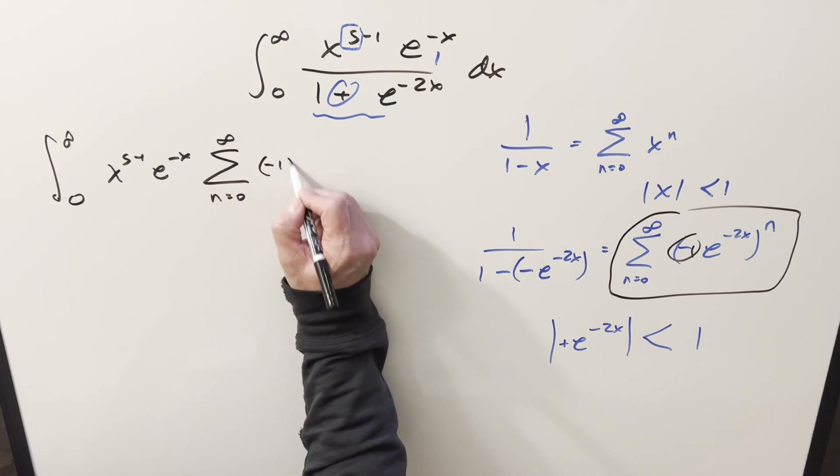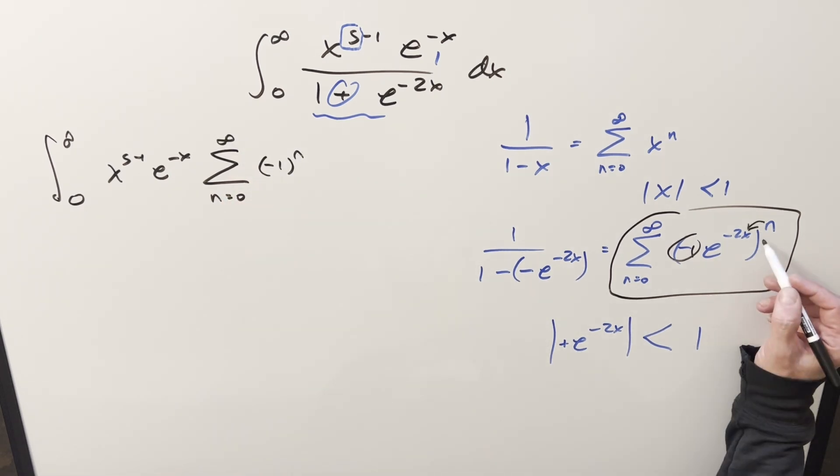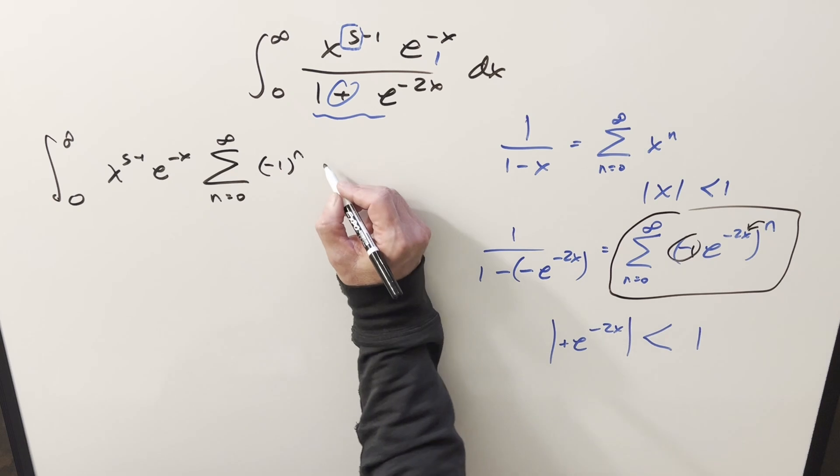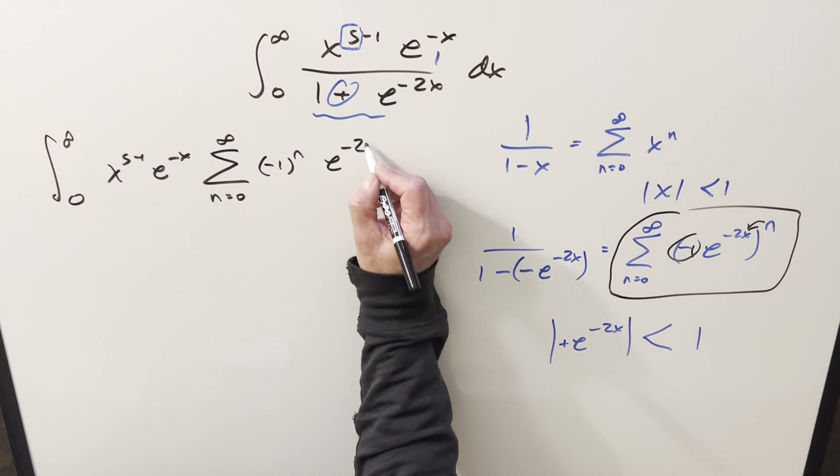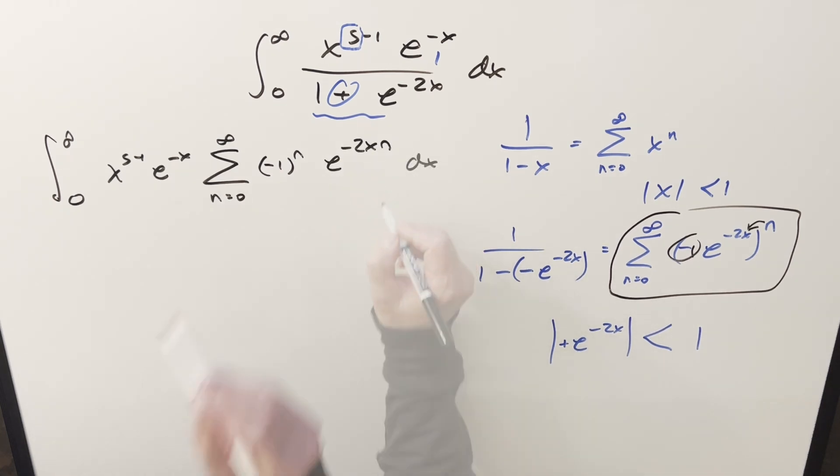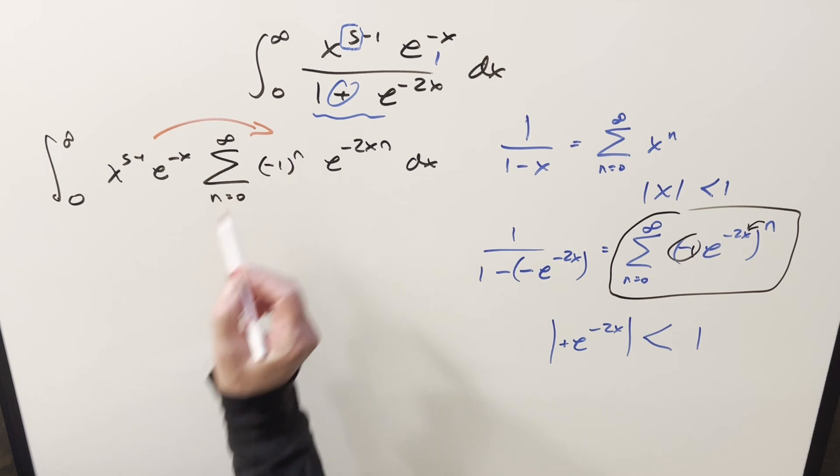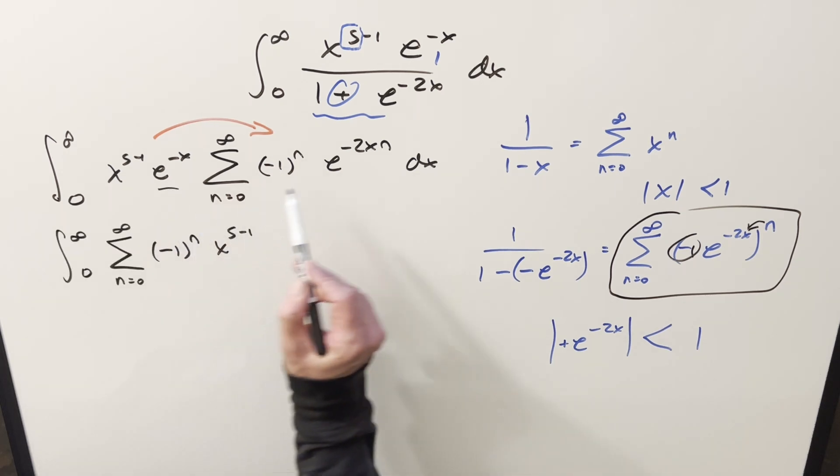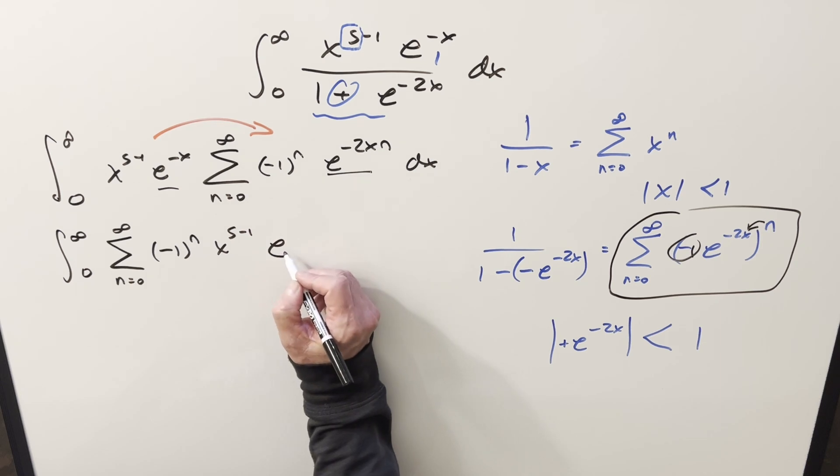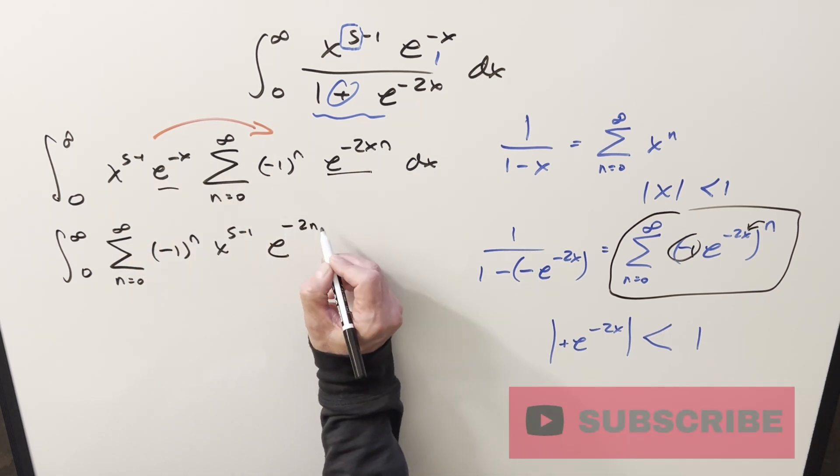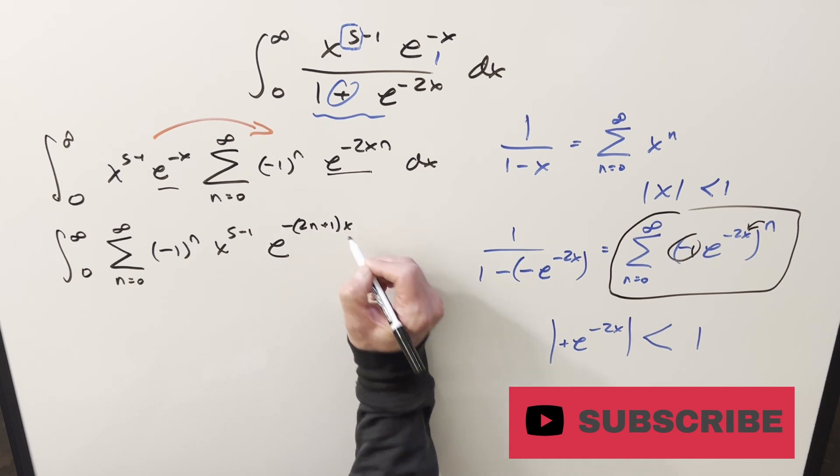So when I do that, we'll have minus 1 to the n. And then with exponent properties, let's distribute the n in here. We'll have e to the minus 2xn. And then let's distribute all this stuff in to get it all as one term. But now for e to the minus x and this right here, we've got the same base. So I'll combine this together. We have minus x in common, so I can actually write this as minus 2n plus 1 times x, dx.